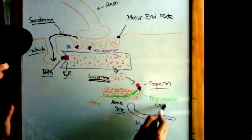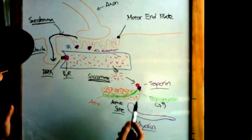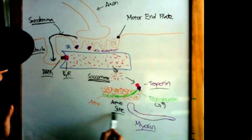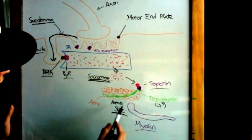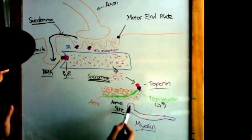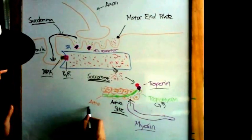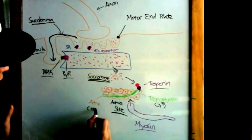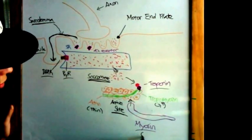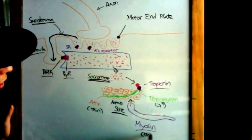Previously, tropomyosin was blocking the active site on actin, and it is not until the calcium binds to troponin that troponin moves tropomyosin to expose the active site. Once the active site is exposed, the myosin head binds to the active site forming a crossbridge. Now remember, actin is the thin filament of the sarcomere, whereas myosin is the thick filament of the sarcomere.